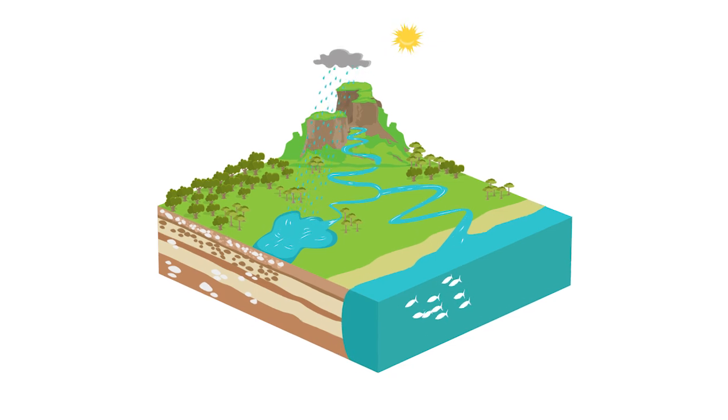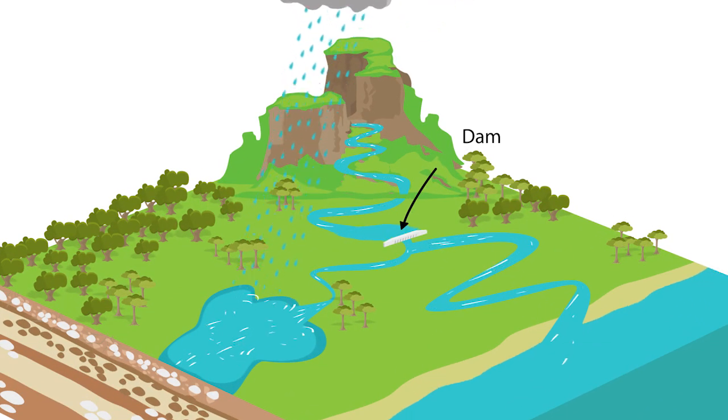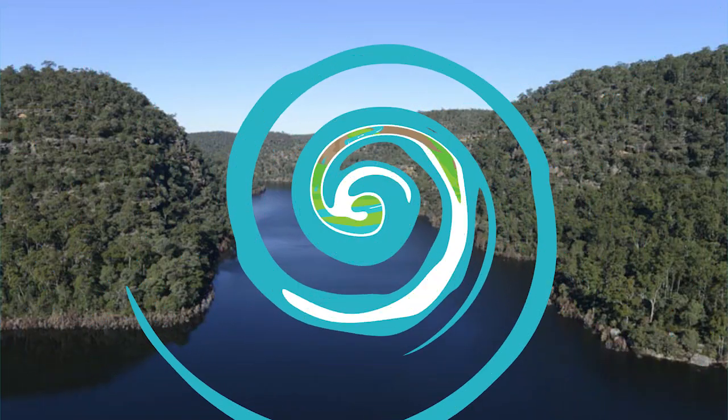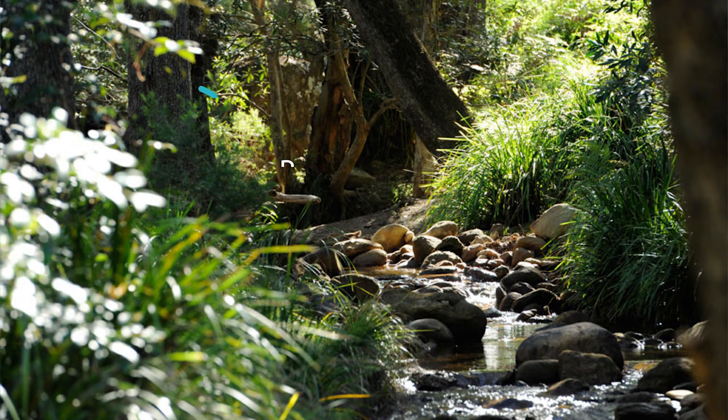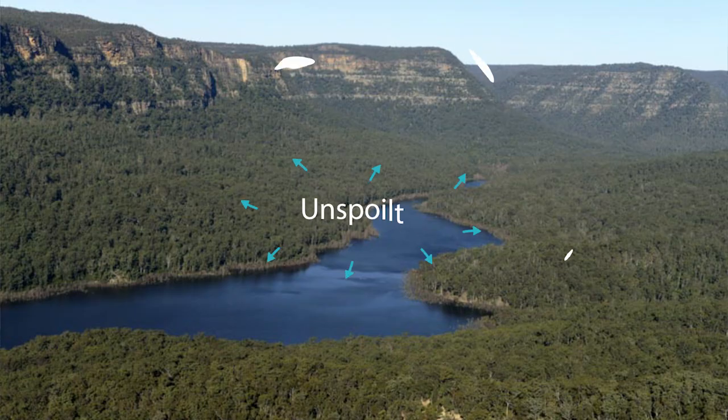In Sydney, we manage some catchments by building dams to collect drinking water. These catchments are surrounded by native bushland and national parks, meaning that our source of drinking water is protected, natural and unspoiled.